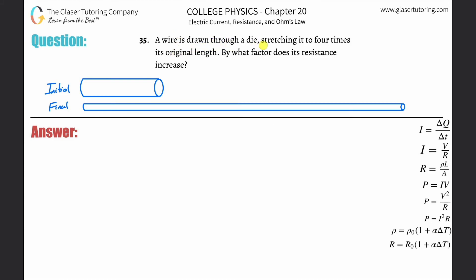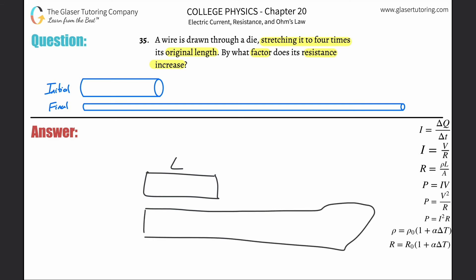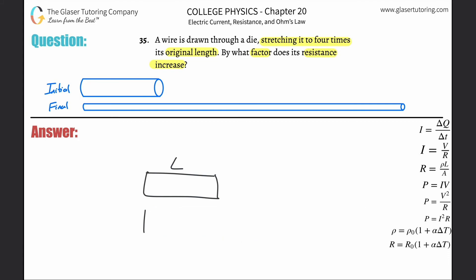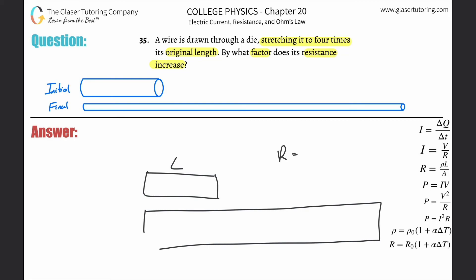Problem 35: a wire is drawn through a die, stretching it to four times its original length. By what factor does its resistance increase? You have to be careful with the wording. If you just think about what happens to resistance as length changes — say we had a copper wire and just considered a longer piece — then R equals resistivity times length divided by cross-sectional area, so if L goes up by four, resistance increases by four. However, upon careful reading, that's not exactly what the problem is saying.